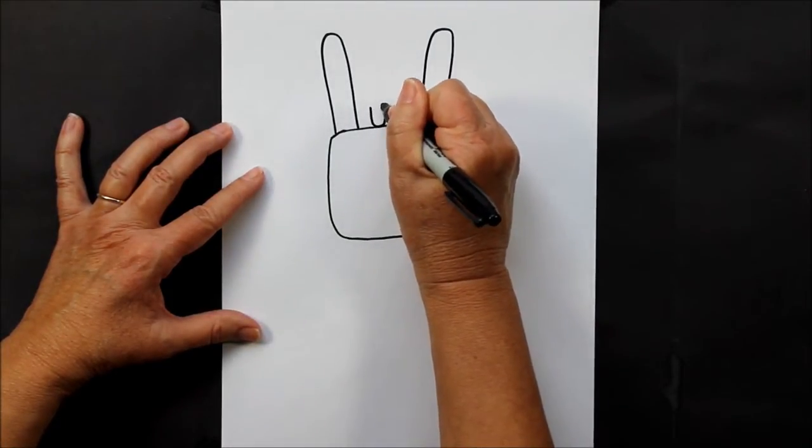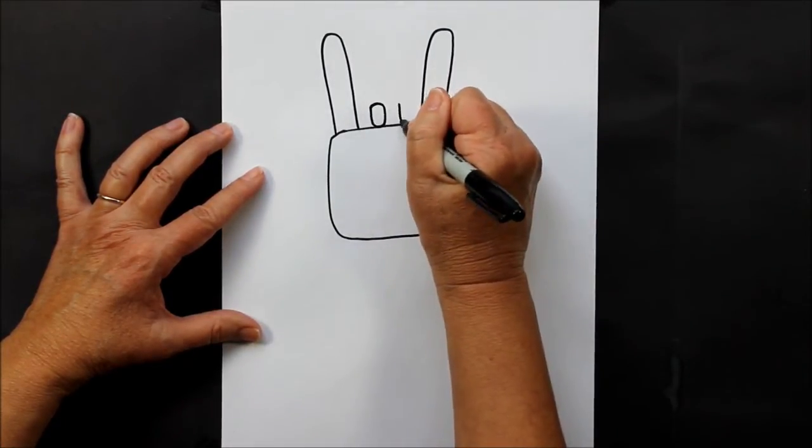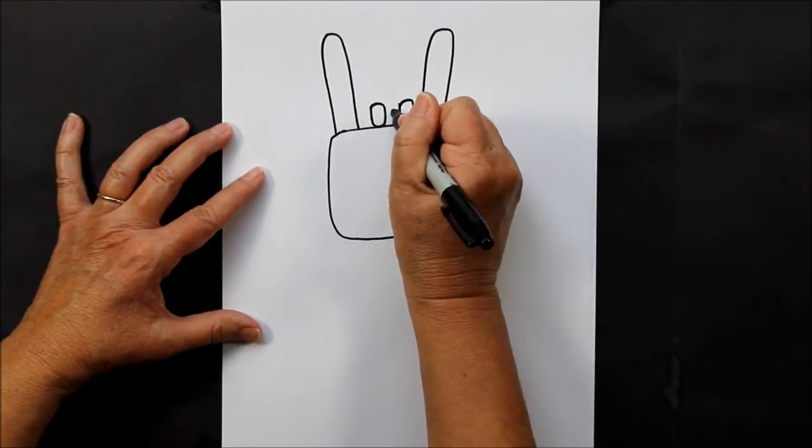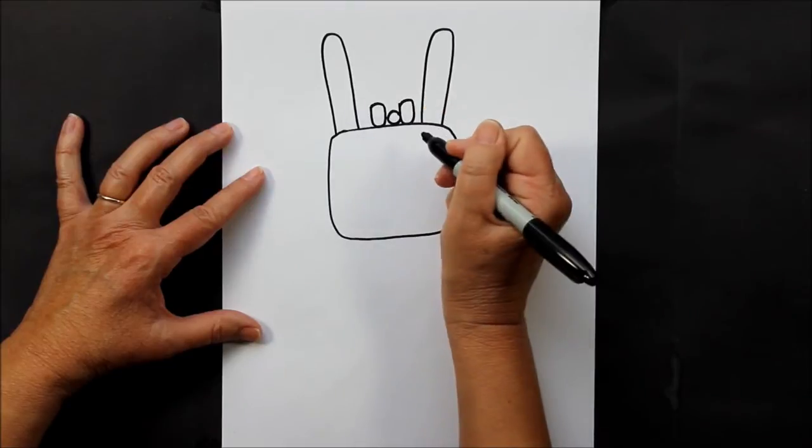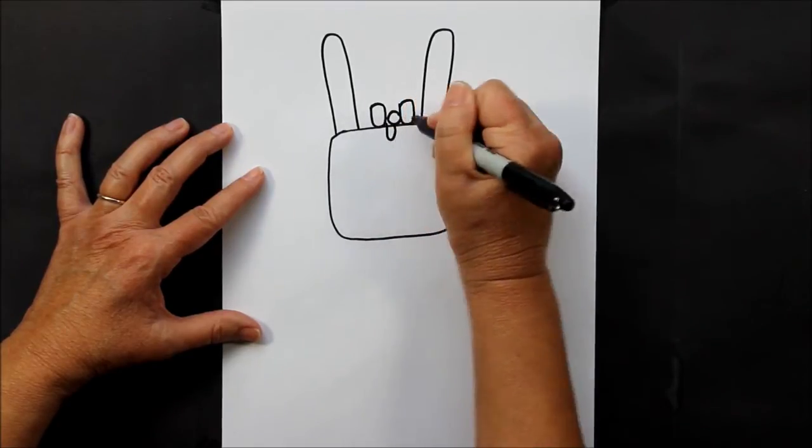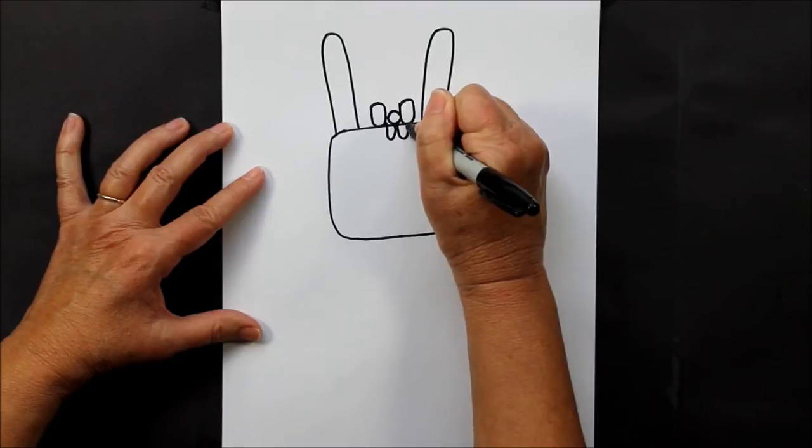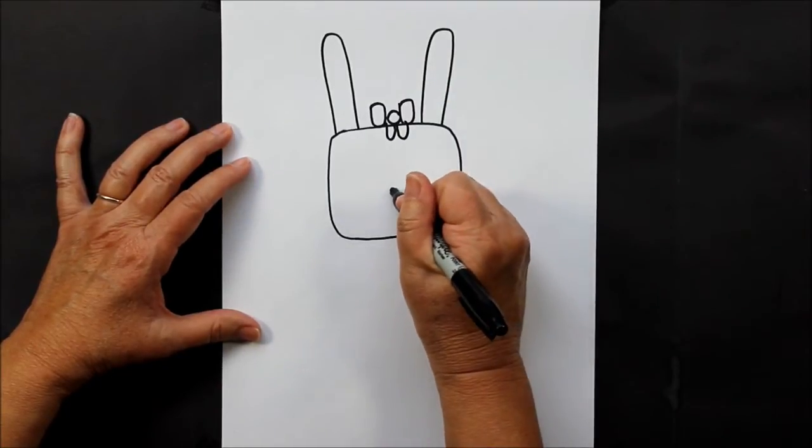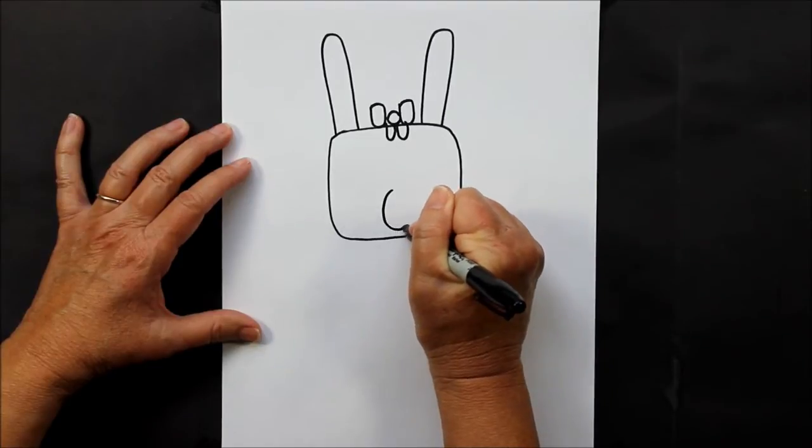And you can even put some little ribbons that come down like this. Now we're going to come down to the bottom part of her face and make an oval with a little triangle that's filled in and a straight line down. That's going to be her nose and her mouth.